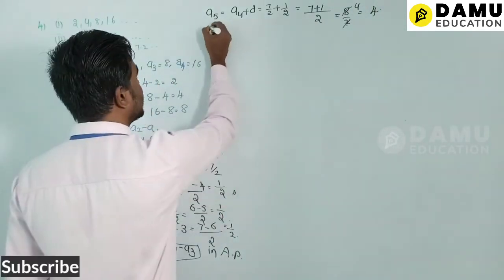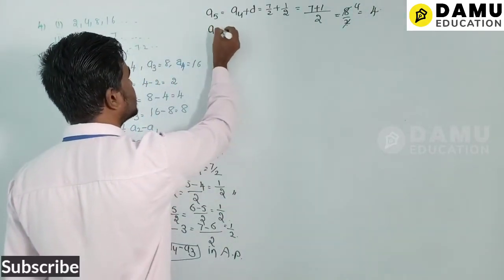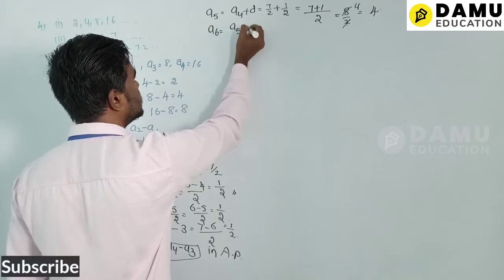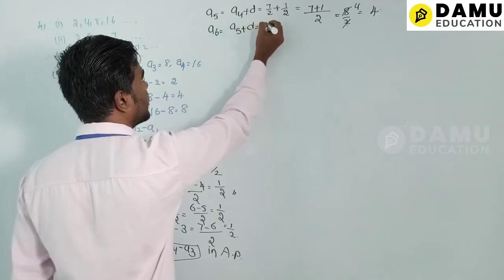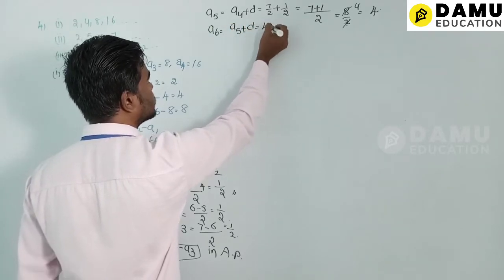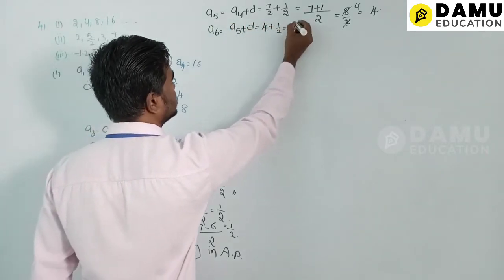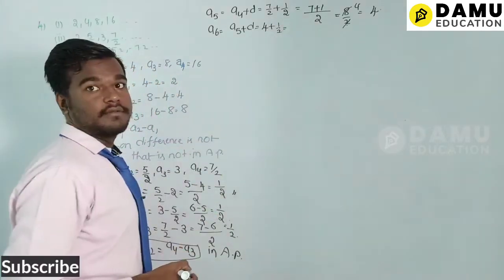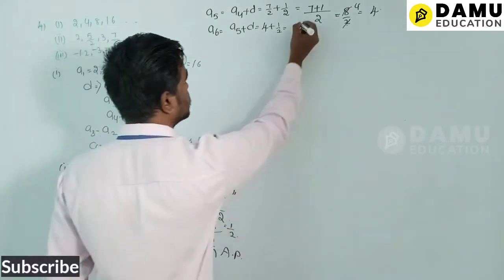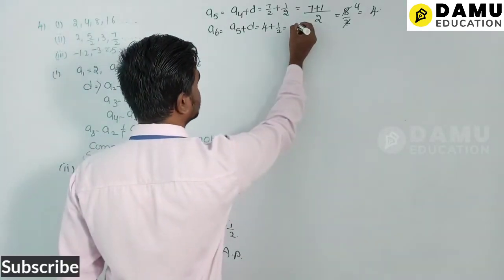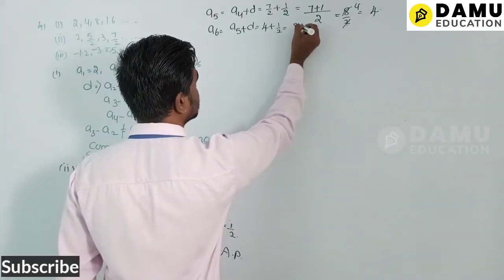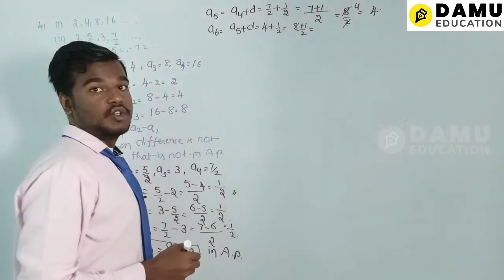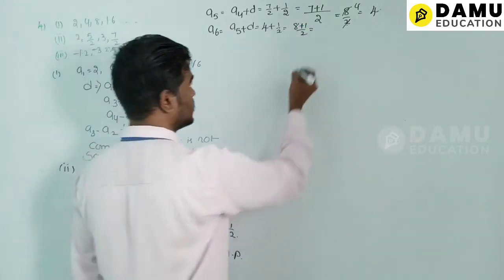Then a6 = a5 + d = 4 + 1/2. Taking LCM: (8 + 1)/2 = 9/2. So a6 = 9/2.